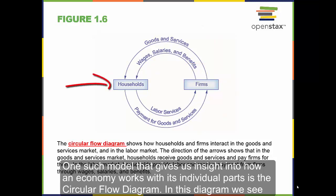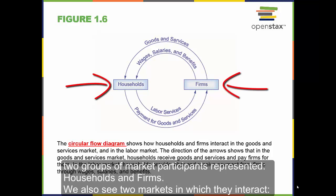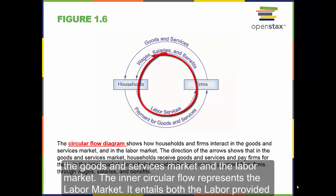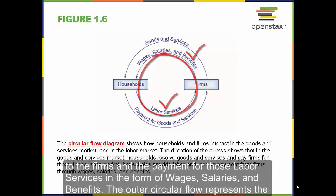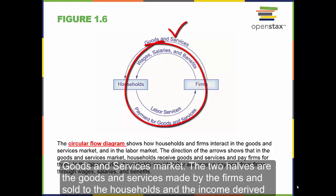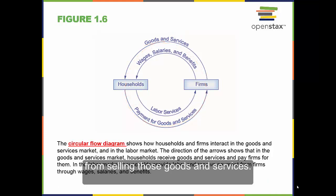One such model that gives us insight into how an economy works with its individual parts is the circular flow diagram. In this diagram, we see two groups of market participants represented: households and firms. We also see two markets in which they interact: the goods and services market and the labor market. The inner circle flow represents the labor market, entailing both the labor provided to the firms and the payment for those labor services in the form of wages, salaries, and benefits. The outer circle flow represents the goods and services market, covering the goods and services made by firms and sold to households, and the income derived from selling those goods and services.